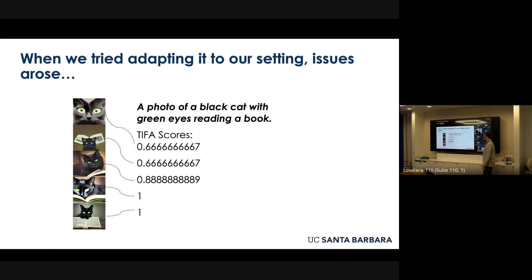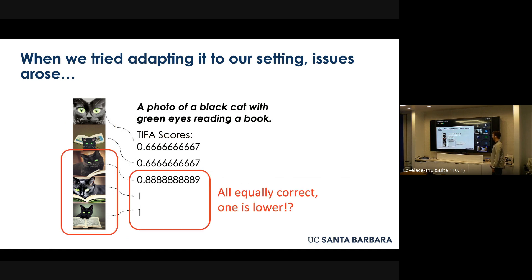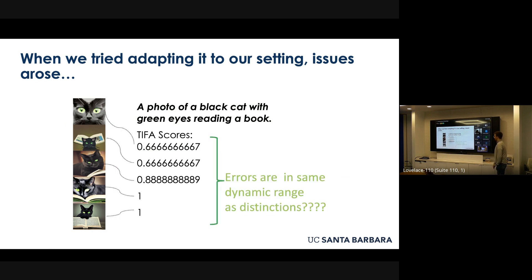Before we could even get to adapting this for cultural questions, we found issues with this technique for scoring image correctness. For example, we asked for 'a photo of a black cat with green eyes reading a book.' The first image has just a black cat with green eyes, and the second has a black cat with green eyes next to a book, but they get assigned the same score by this metric. Similarly, we have three images that are all equally correct, but one gets a lower score than the other two — and there are also issues with the dynamic range, like to what extent is going from 0.9 to 1.0 actually better than having equally bad 0.6 scores.